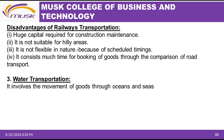Disadvantages of rail transport: it requires huge capital for construction and maintenance — the Kenyan SGR cost the government close to 360 billion shillings. It is not suitable for hilly areas, is not flexible in nature because it has a scheduled timetable, and it takes much more time for booking of goods compared to road transport.